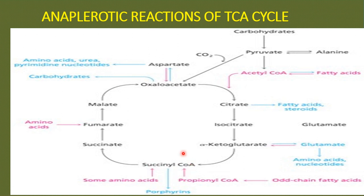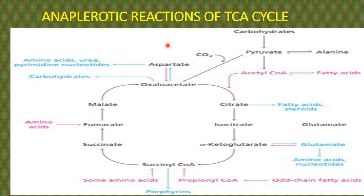Succinyl-CoA can also be replenished — it is involved in porphyrin ring synthesis, and can be synthesized by transamination of certain amino acids. Additionally, succinyl-CoA can be replenished through fatty acid metabolism via propionyl-CoA, which gives rise to succinyl-CoA. These various reactions fill up intermediates of the citric acid cycle, which is why they are collectively called anaplerotic reactions or anaplerosis — also referred to as ancillary reactions.